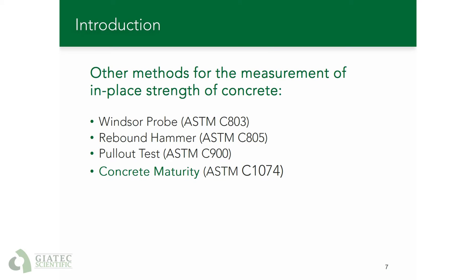There have been other methods developed for the real-time estimation of concrete strength. Some of these methods standardized by ASTM include the Windsor Probe, where a metal rod is fired into concrete and its penetration depth is correlated with strength; the Rebound Hammer or Schmidt Hammer; and the Pull-out test, which is slightly destructive as a rod is embedded in fresh concrete and the force to extract it from hardened concrete is correlated with strength. But among these methods, concrete maturity has been widely adopted as it is relatively easier and more accurate.